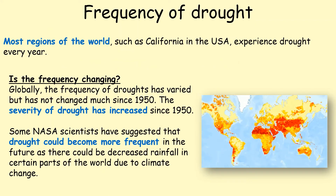Frequency of drought: most regions of the world experience drought every year. Globally the frequency of droughts has varied, but the severity of drought has increased over about the last 70 years. Some NASA scientists have suggested that drought could become more frequent in the future.